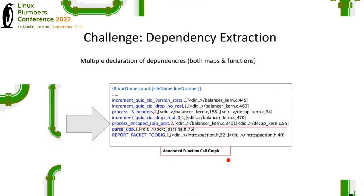The extraction is divided into two phases. At the end of phase one, when the function call graph is generated, we've found that many functions and structures are defined multiple times at different locations. At the end of stage one, we ask the developer to step in and pick the specific instance of the function they want. For example, the underlying function may have two instances: one in balancer_con.c at line 340 and another in dcap_con.c at line 85. The developer needs to choose one. Once this file is cleaned, we do the actual extraction using the TXL-generated annotation.